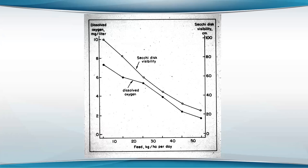Once you get past about 30 kilograms per hectare per day, the concentration of oxygen begins to drop significantly. Beyond about 30 kilograms per hectare, the oxygen becomes low enough that it begins to stress the fish. During the day it's higher, but the fish gets stressed in the early morning and they don't feed as well the rest of the day, even though there may be plenty of oxygen later.